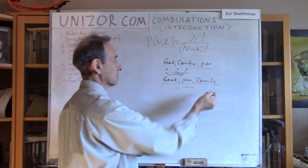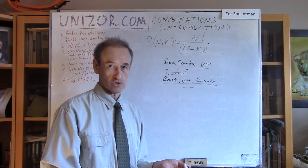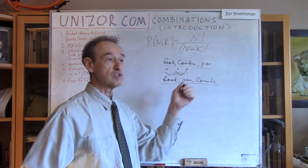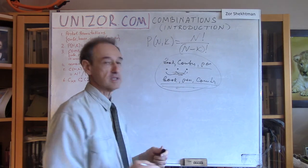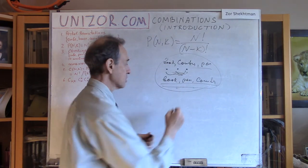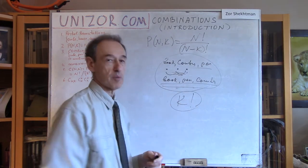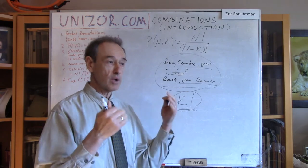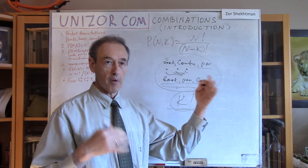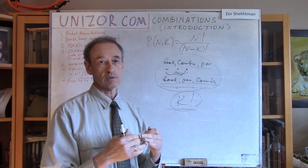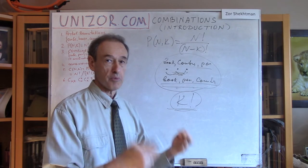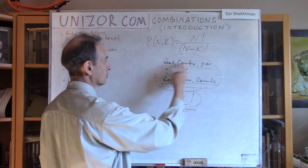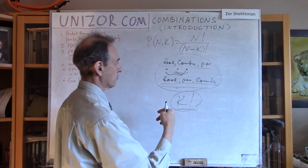This means the total number of partial permutations is reduced by the factorial of the subset size — k factorial. Remember, k is the number of elements in the partial permutation. So if you divide by k factorial, you reduce the number of partial permutations to the number of combinations, because k factorial partial permutations always constitute one particular combination — all the different orderings of whatever subset we chose containing k elements.